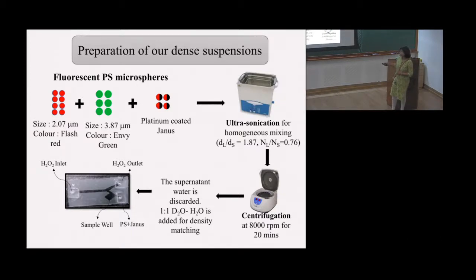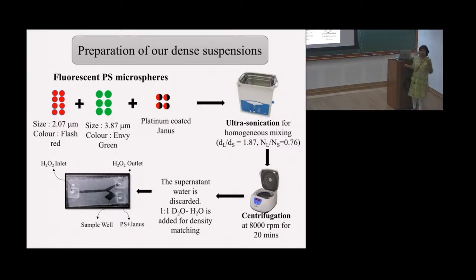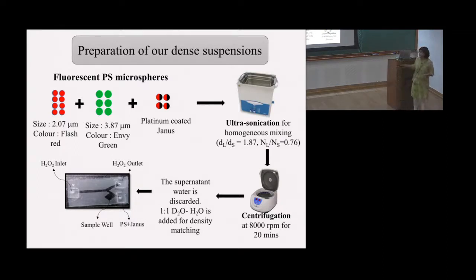We do experiments in a microfluidic geometry — a two-centimeter square cross-section channel made of PDMS on a glass slide. There is a well where we do the experiment, with H2O2 coming in from one side. We focus the microscope on the well, look at the trajectories, and have an H2O2 outlet on the other side. The H2O2 injection speed must be extremely slow so there is no convective flow inside the well — a flow rate of 34 microns per minute.